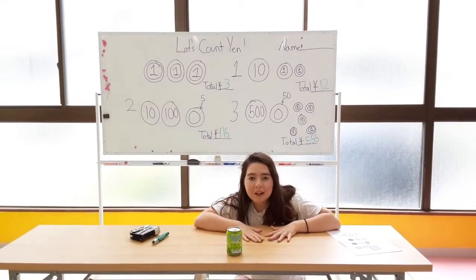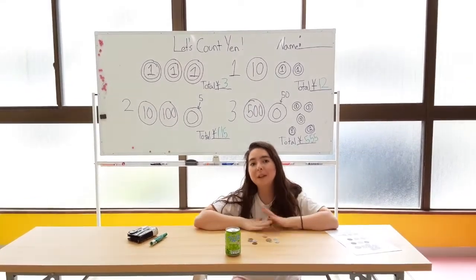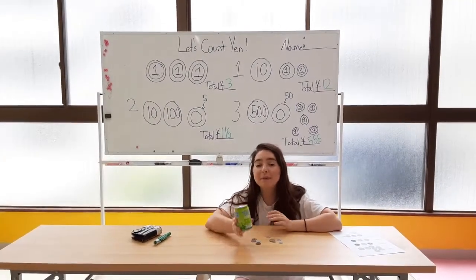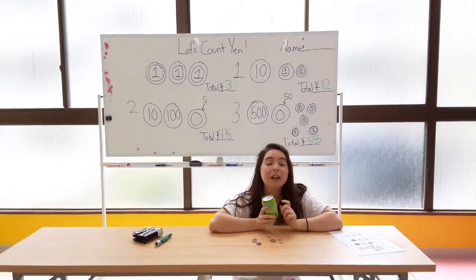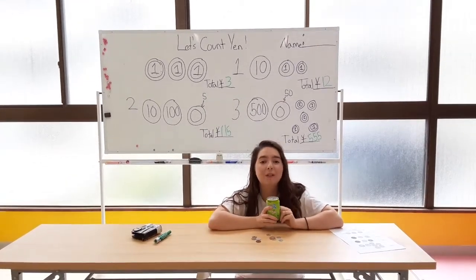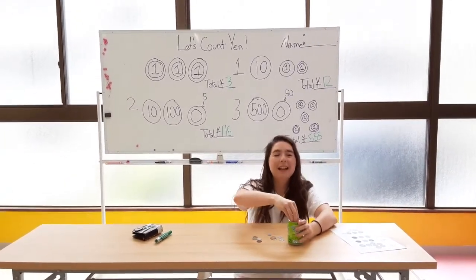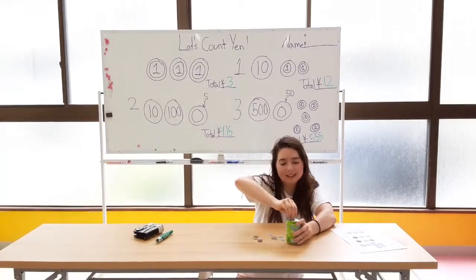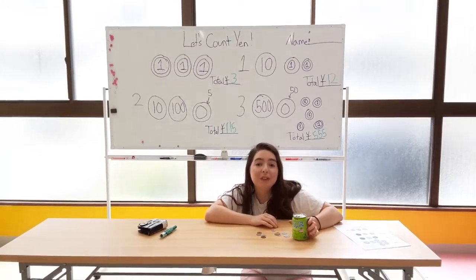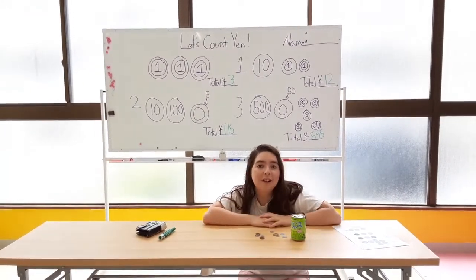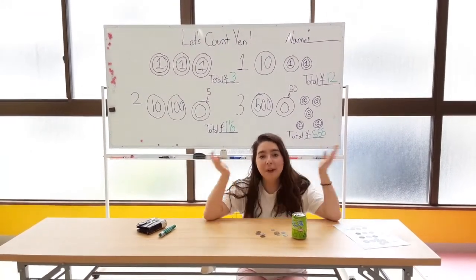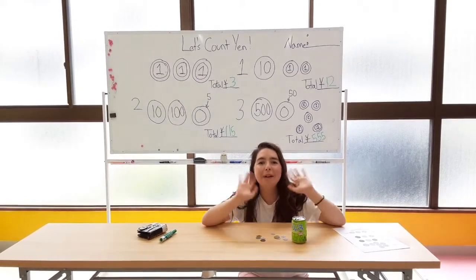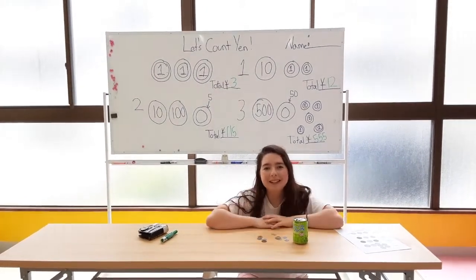So when we use our coins, we're able to buy what we want. I bought myself a juice from the vending machine. Let's open it up. So let's get our coins and think about what can we buy with our money. Bye-bye, we'll see you next time.